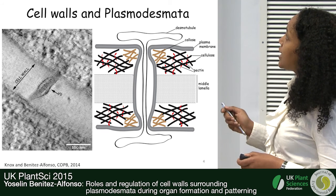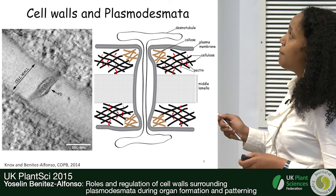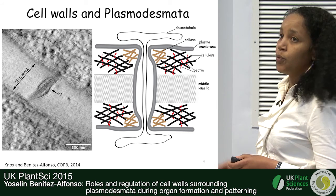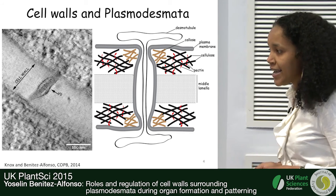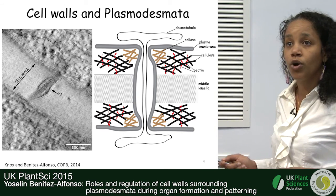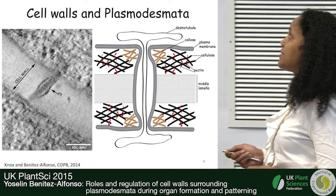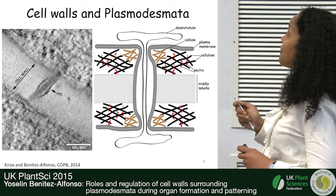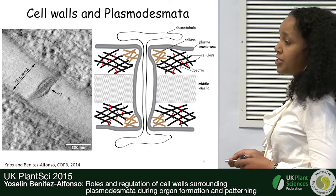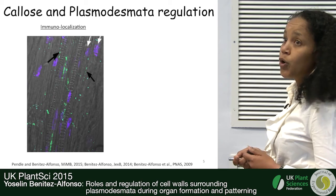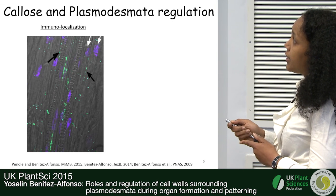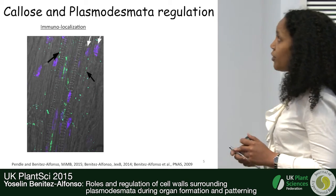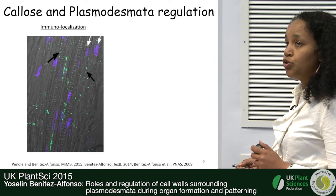Plasmodesmata provide a cytoplasmic continuum between cells, delimited by the plasma membrane, but also regulated by the cell wall. This regulation is mediated by the deposition of a cell wall glycan very specific to Plasmodesmata sites — the glycan callose. In this immunolocalization study, you can see that callose, shown in green, is deposited along the cell wall in a punctuated pattern corresponding to Plasmodesmata sites.